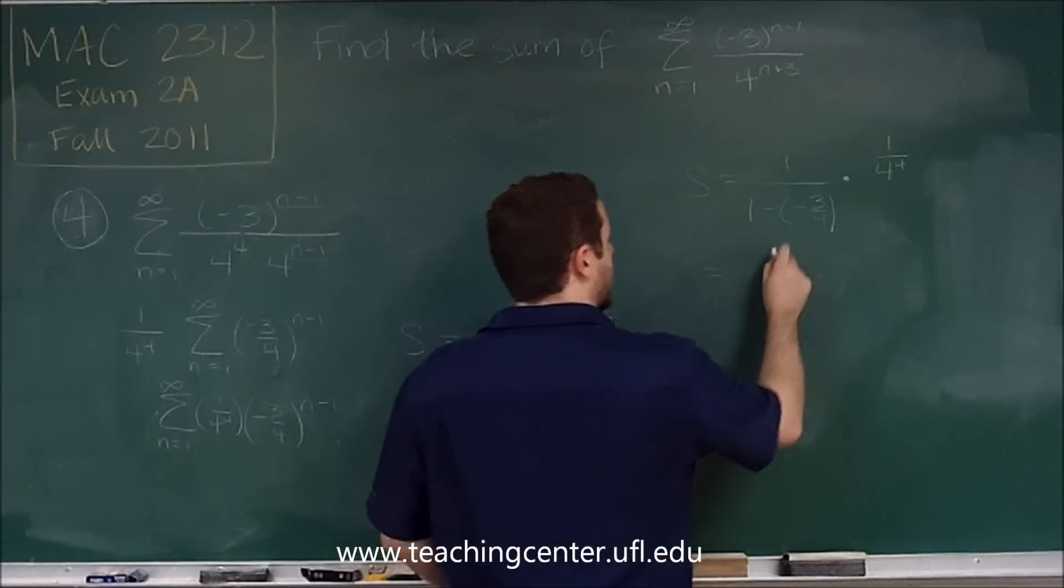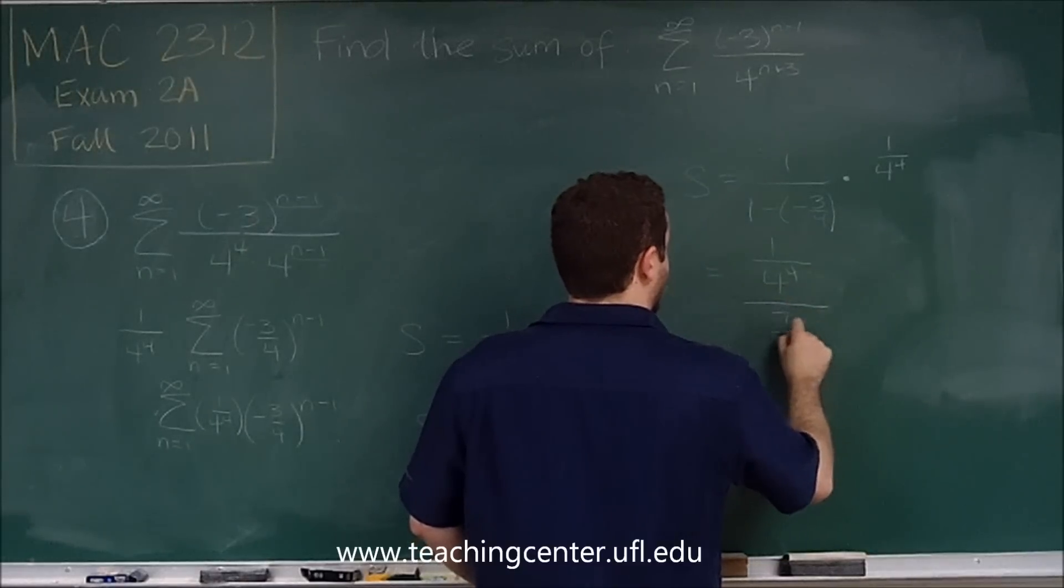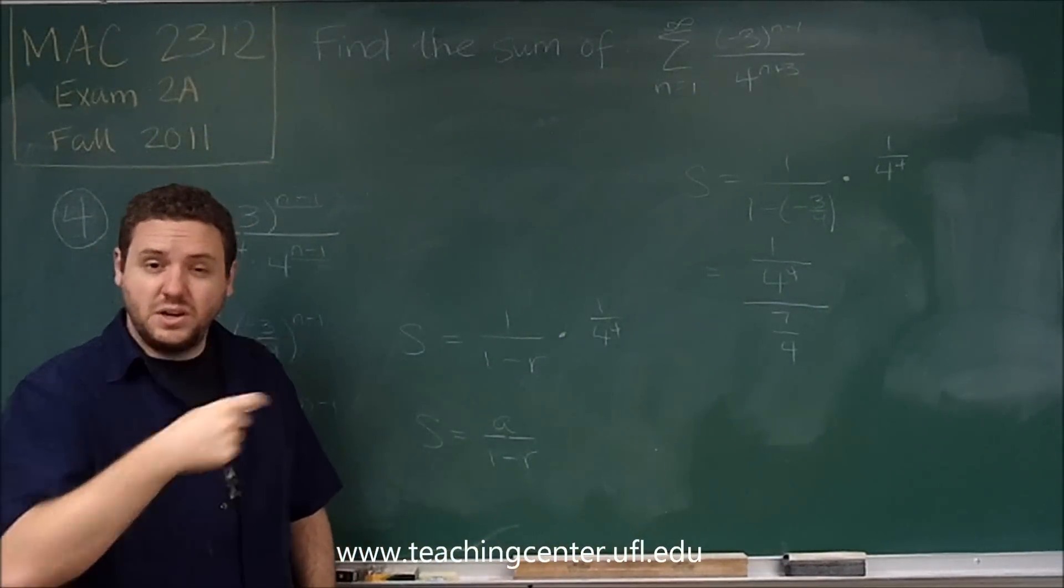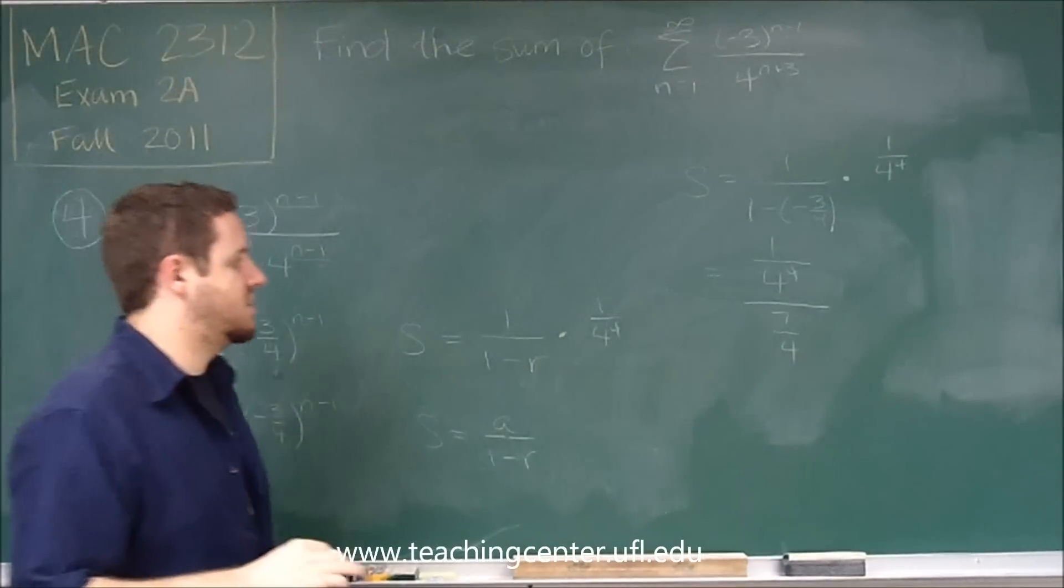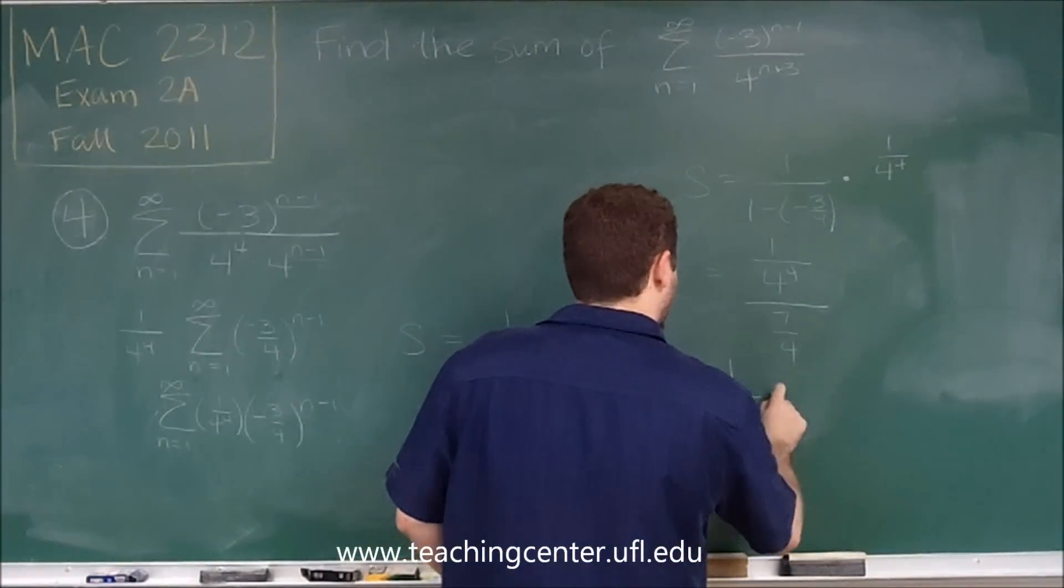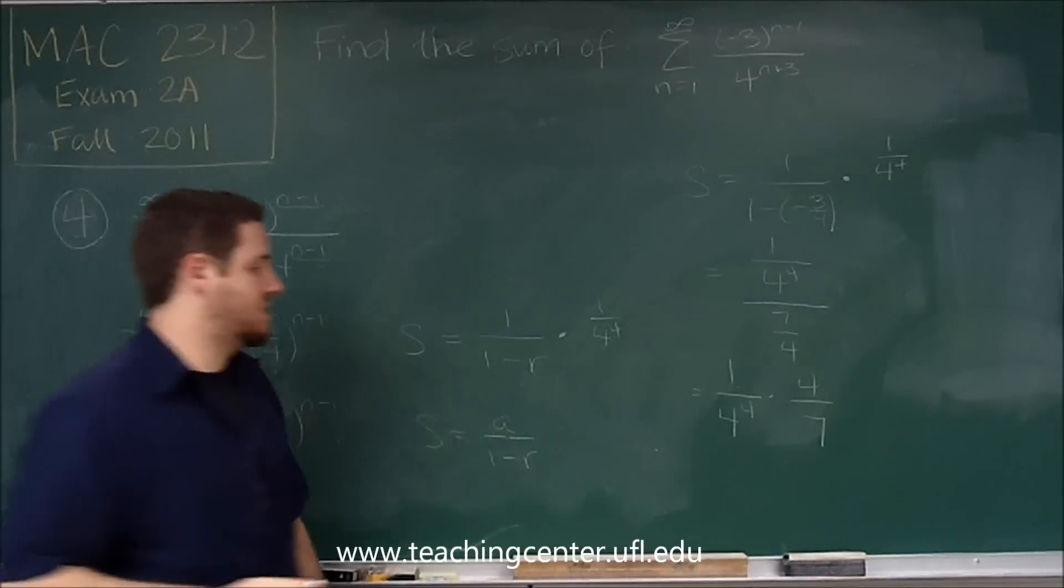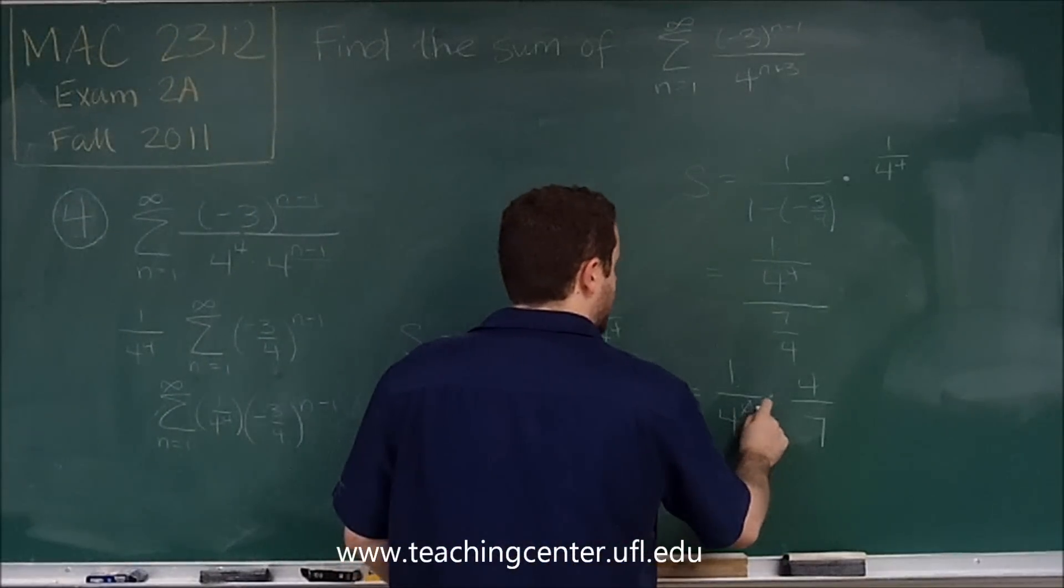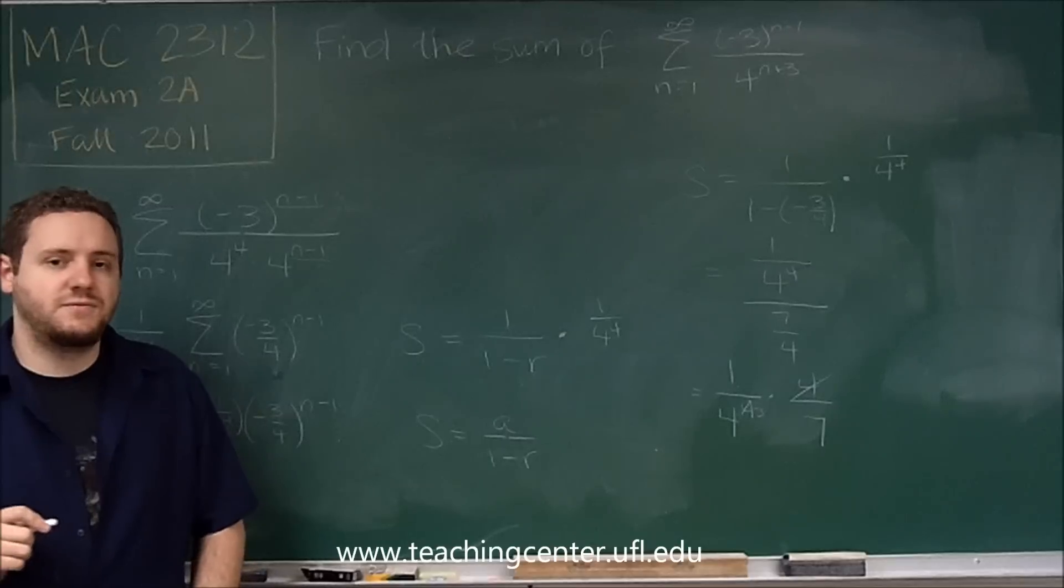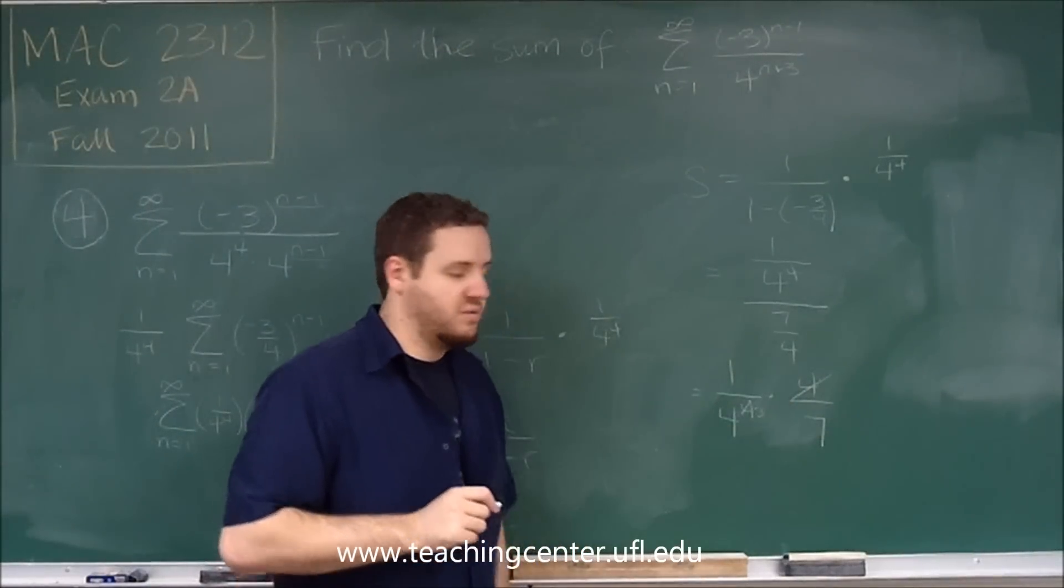So if we simplify this a little bit more, we get one over four to the four over seven over four. So we can do a little bit of simplification here. If we rearrange these fractions, it would look like this. So you can see that one of these fours is going to cancel out. This is going to leave us with four cubed, and that one would cancel out. Four cubed is sixty-four. We're doing one over sixty-four times one over seven.